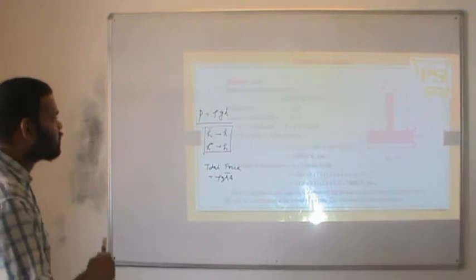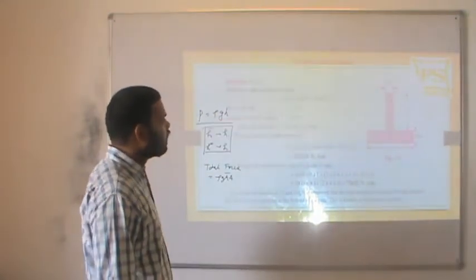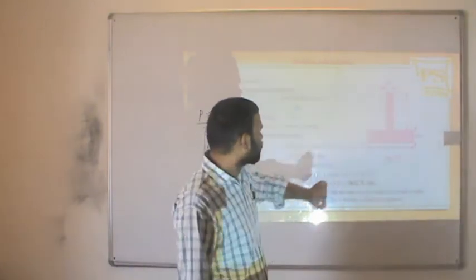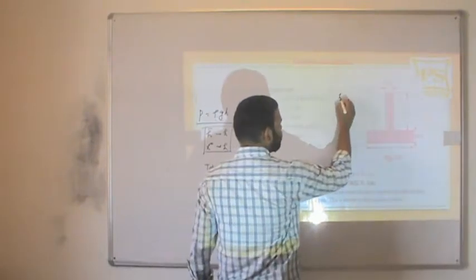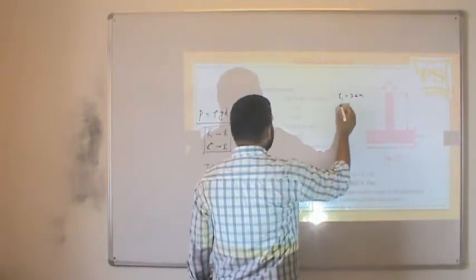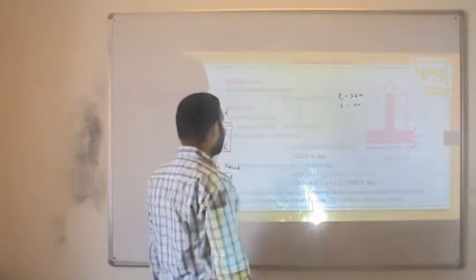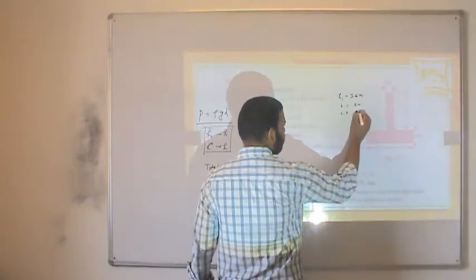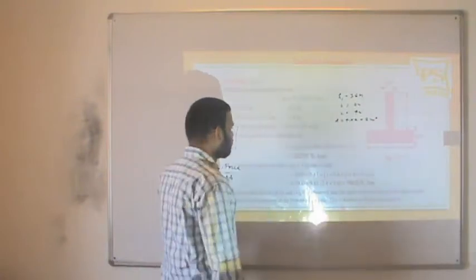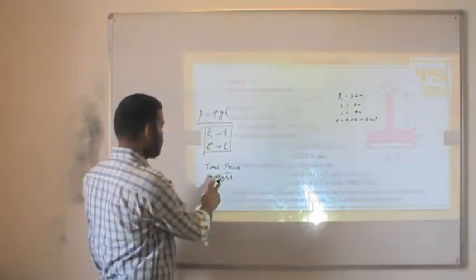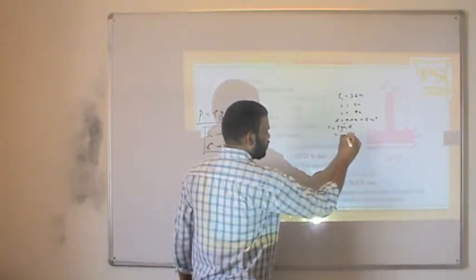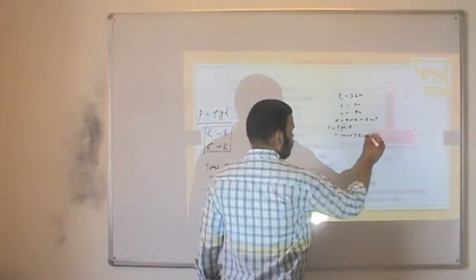The width of the tank is 2 meters. First we calculate H₁: H₁ equals 3 meters plus 0.6, so H₁ equals 3.6 meters. Width is 2 meters and length is 4 meters, so the area equals 4 × 2 = 8 square meters.